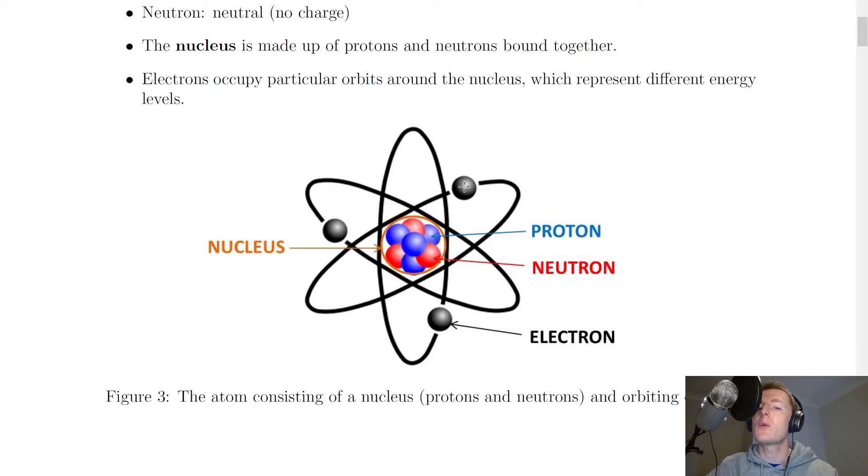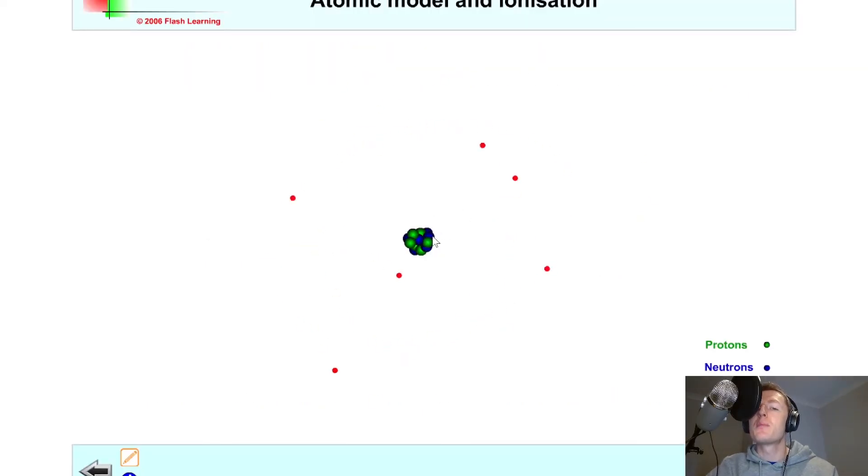So just to show you a quick simulation of this. If this was our nucleus in the middle, with protons and neutrons bound together, then without drawing the orbitals, you can see the electrons are moving round in different patterns there. So some are coming out pretty far away from the nucleus, and some are staying quite close to the nucleus. And that just depends on their energy level.